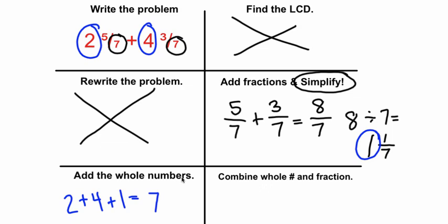And now to get our final answer we're going to combine the whole number seven with the fraction one-seventh. So our final answer is seven and one-seventh.